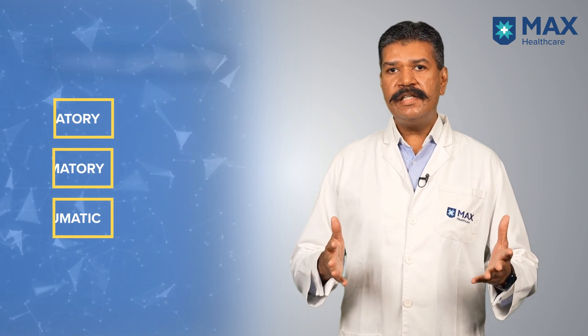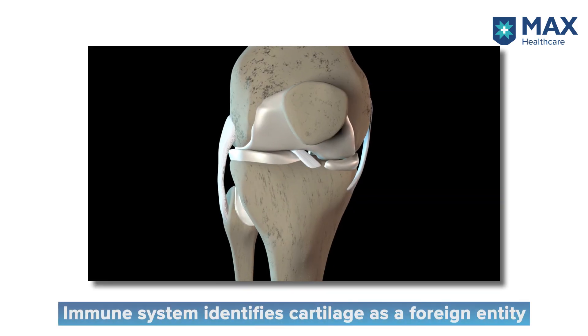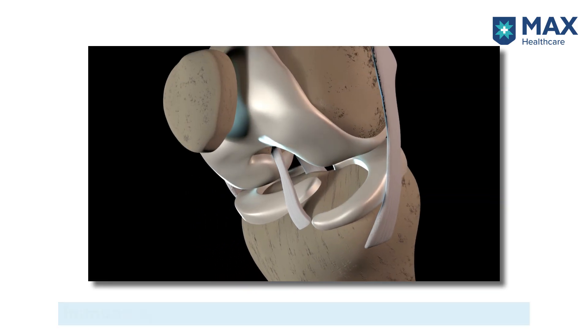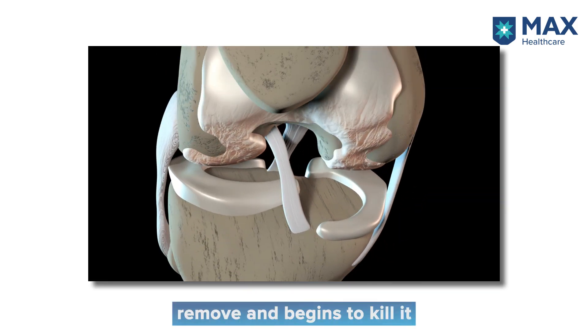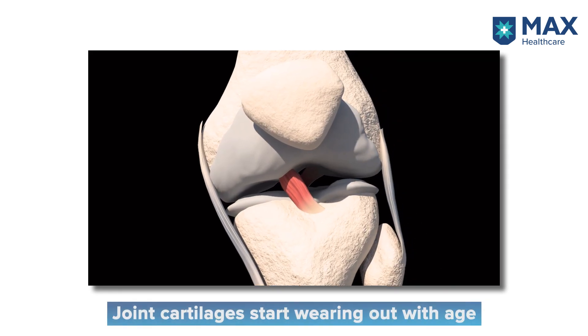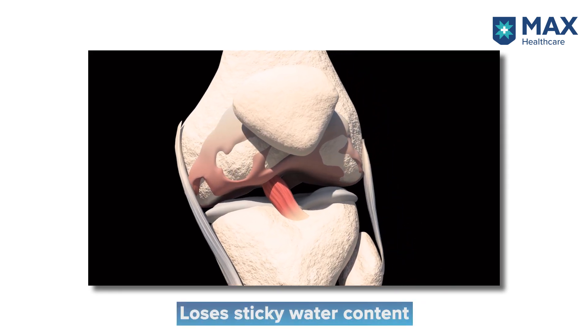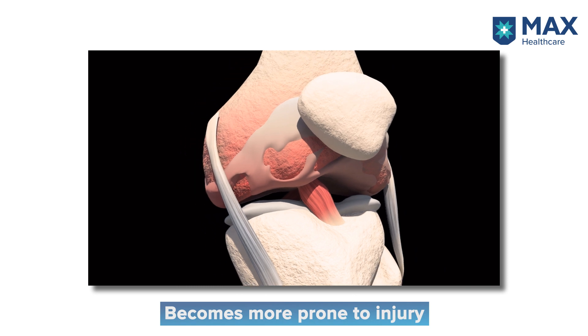Inflammatory arthritis is when your body's own immune system acts against you. Due to some unidentified trigger, the immune system recognizes cartilage as some foreign entity and starts to destroy cartilage. Diseases under this category are often grouped under the broad term rheumatism. Non-inflammatory or degenerative arthritis is what one experiences as one gets older — the cartilage decreases in its thickness, loses its water content, and becomes more vulnerable to injuries.